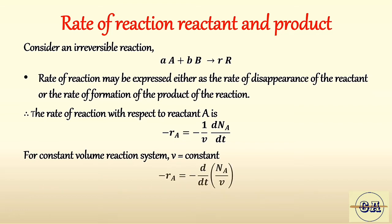Hence we can write the 1/V term inside the derivative. The equation becomes: minus rA equals minus d/dT of NA by V. Since CA equals NA by V, the rate of reaction of reactant A can be written as: minus rA equals minus dCA by dT.